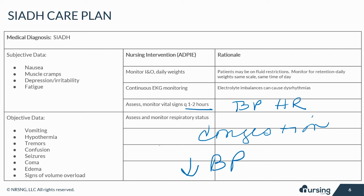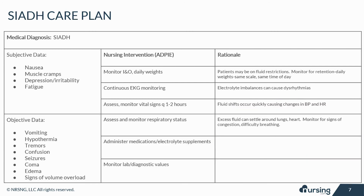SIADH can also be triggered by pneumonia, so monitor for this underlying cause as well. Medications and supplements are carefully given to avoid overloading too quickly. Supplements like potassium may be given to regulate electrolyte imbalances. Demeclocycline or lithium may be given to stop the kidneys from responding to extra ADH.